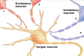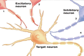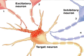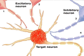When both neurons simultaneously excite the target cell, the excitation builds up — a process known as spatial summation.